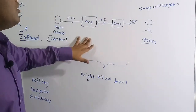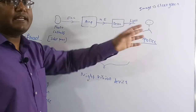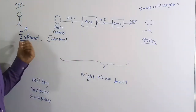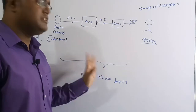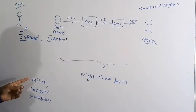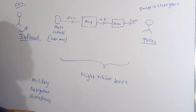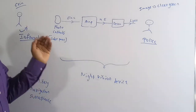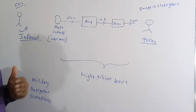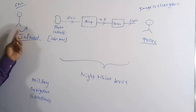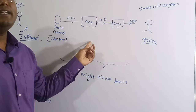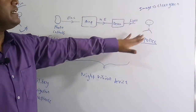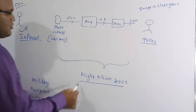This is the rough block diagram of the night vision device, worn like goggles. The person can see a clear green image and easily detect the subject. Night vision devices are used in military navigation and surveillance. The fundamental principle is that hotter objects emit infrared rays, which are captured, amplified, and converted to visible light.